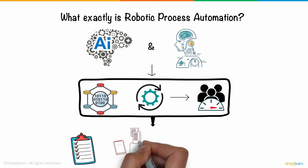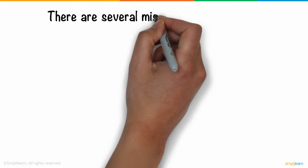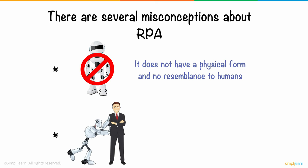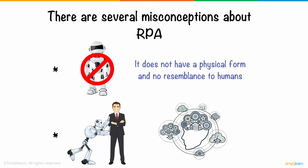There are several misconceptions about RPA. RPA is not a humanoid robot — it does not have a physical form and no resemblance to humans. RPA cannot replace humans or replicate human cognitive functions. It does not have a brain of its own and cannot perform logical or critical thinking as humans do.